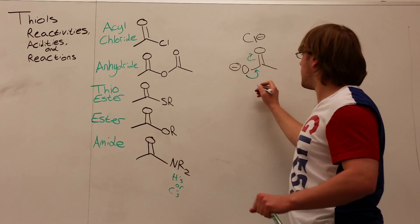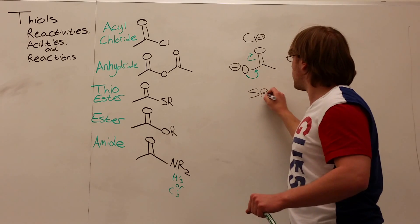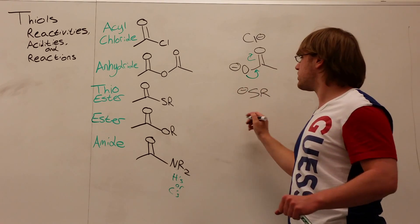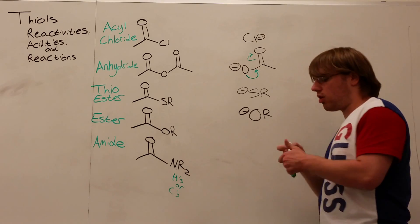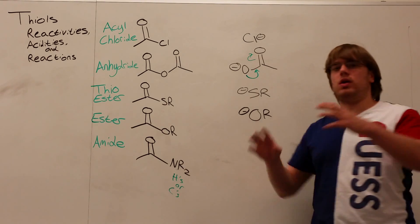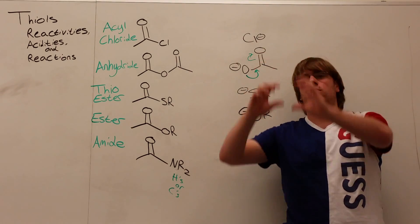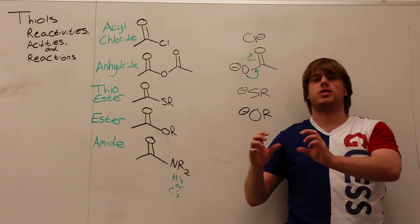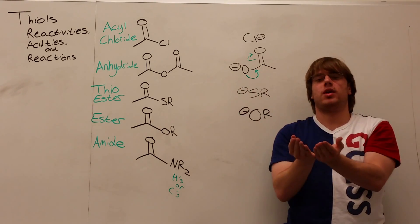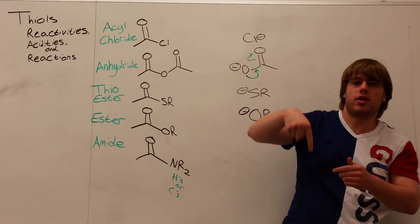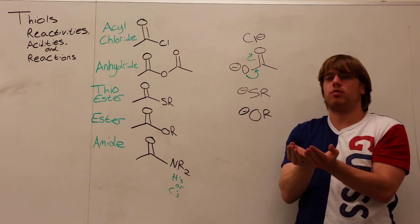Comparing that to an S minus or SR minus in this case for the thioester, versus an OR minus. Why is SR minus more stable than OR minus? Sulfur is in the next row down from oxygen on our periodic table, and what that tells us is that sulfur has a larger atomic radius. We know that as we go down the periodic table, we increase in atomic radius size.